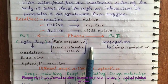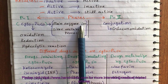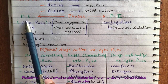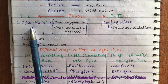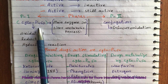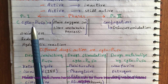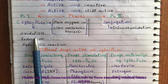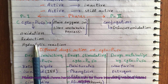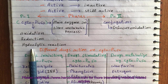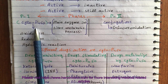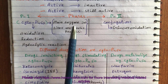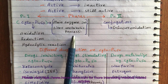There are two phases for biotransformation: phase 1 and phase 2. Cytochrome P450 enzyme is present in phase 1, and this enzyme is responsible for oxidation, reduction, and hydrolytic reactions. We also need to know that cytochrome P450 enzyme is the main enzyme in the liver metabolic process.